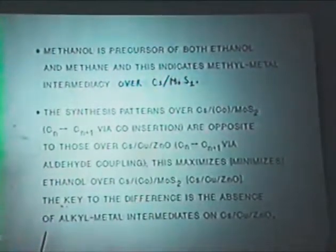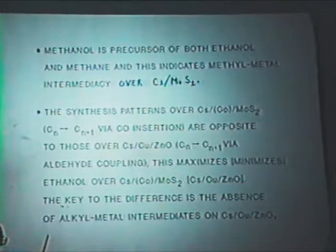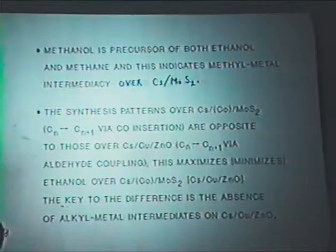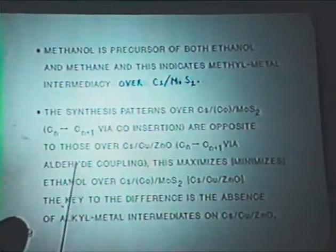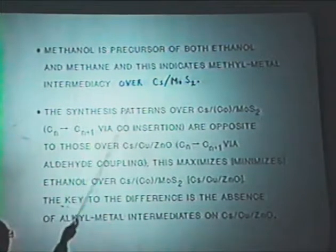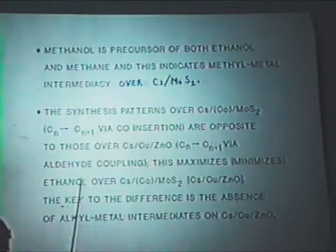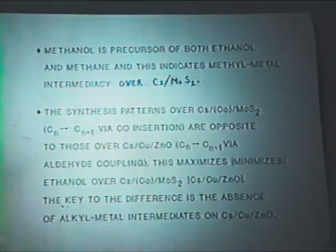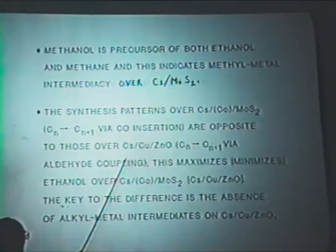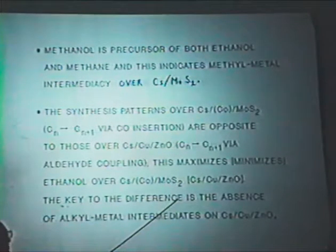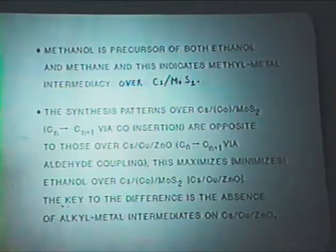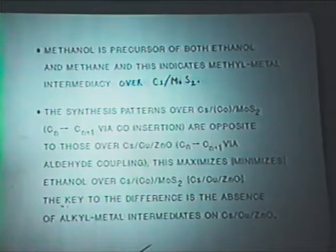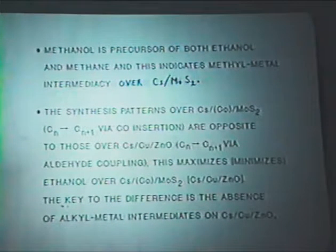In one case, it's oxygenated intermediates undergoing CO insertion, which then undergoes hydrogenation. So that's really what I've summarized on this slide. We have CO insertion over the MOS2 catalyst. We have alcohol coupling in the copper zinc oxide case. One minimizes ethanol. The other maximizes ethanol. And an oxygenated intermediate is a very important species to be considered in these catalysts. So, thank you.